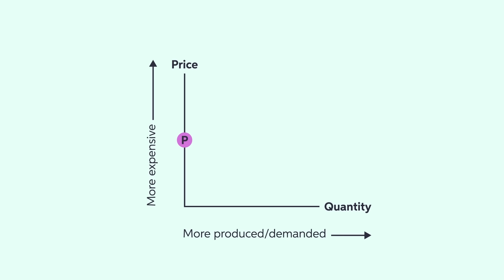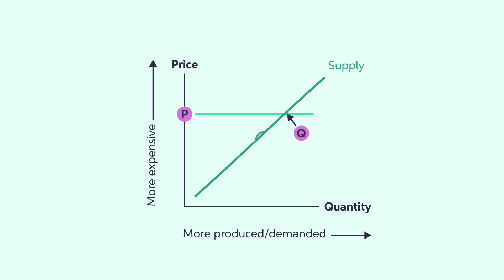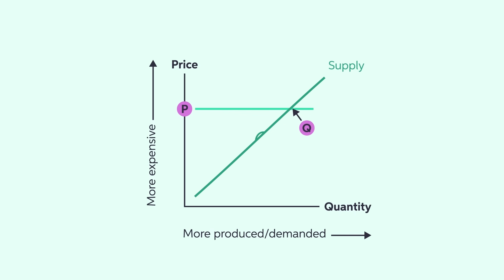In normal circumstances, the supply curve is upward sloping, which means that as prices rise, so does quantity, as firms are incentivized to produce more with higher prices in order to maximize total revenue.